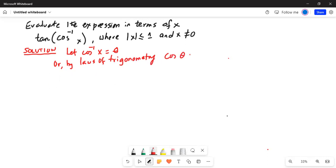If I draw the right angle triangle indicating the angle theta, if this is angle theta, then cosine of theta...